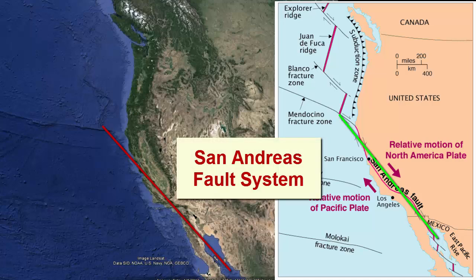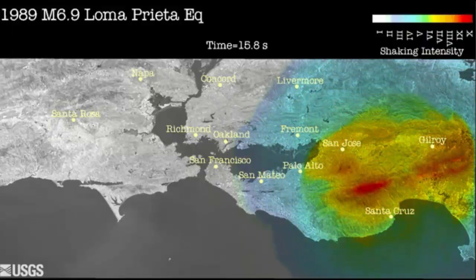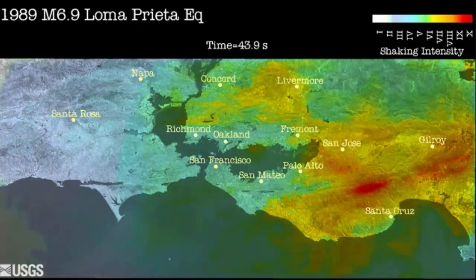Those of us who live along its path are familiar with its associated earthquake hazards. The Loma Prieta earthquake in 1989 was one of the most recent large earthquakes. The magnitude 6.9 earthquake caused significant shaking and damage from Santa Cruz to San Francisco as it released built-up stress related to the transform plate motion.